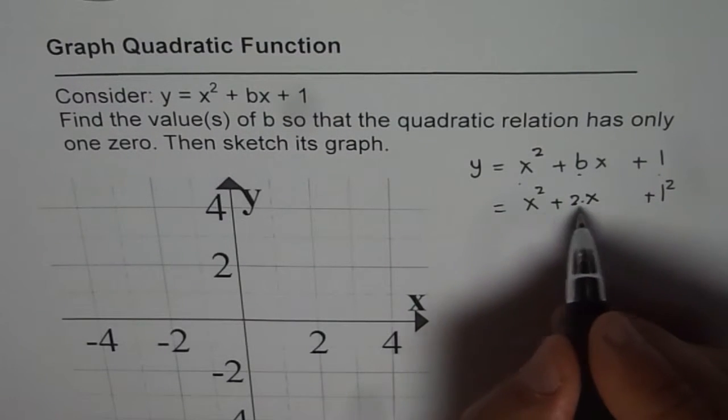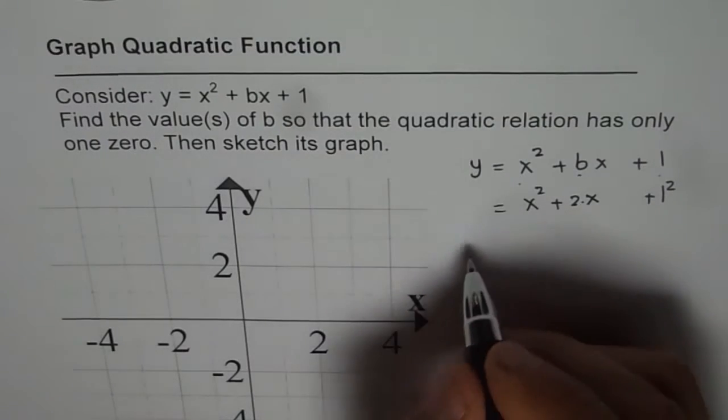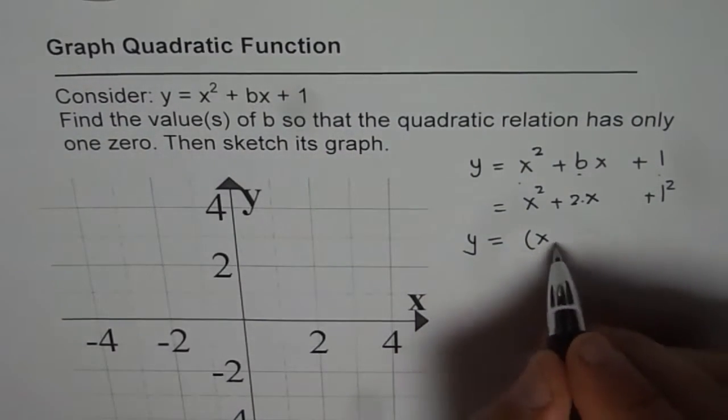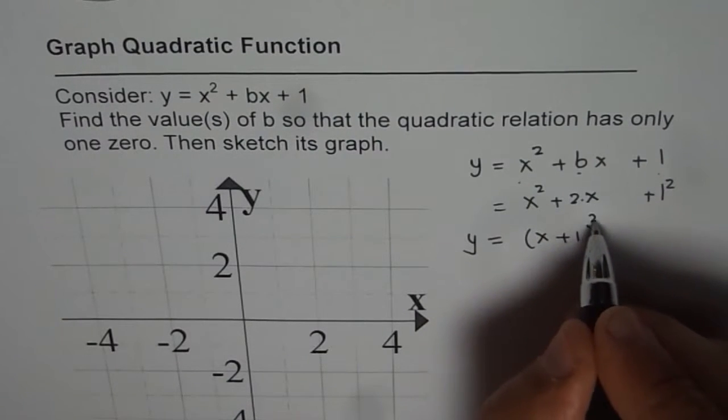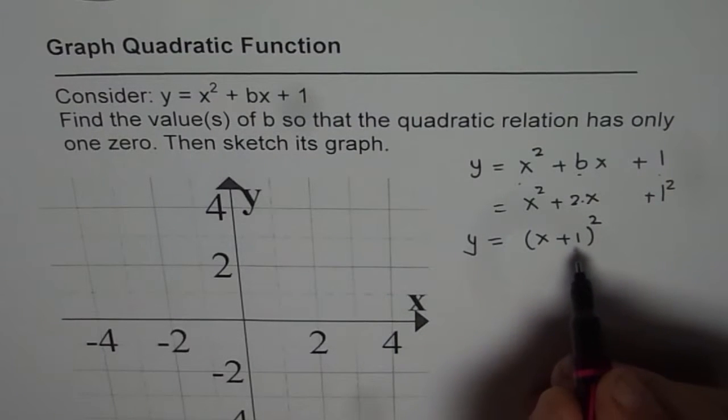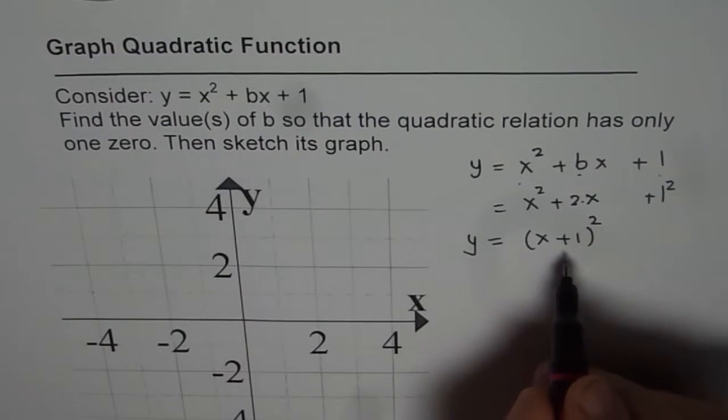Now if I write like this then it becomes a perfect square and we could write this as y equals x plus 1 whole squared. So that becomes an equation of a quadratic relation where we will have only one zero. Then the zero will be at x equals minus 1.